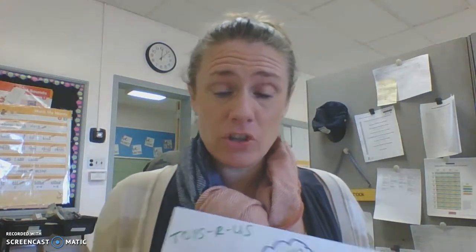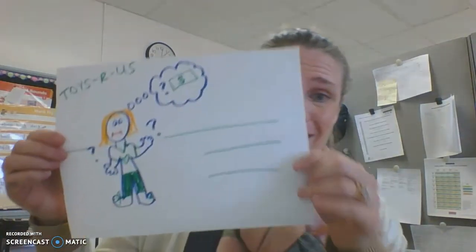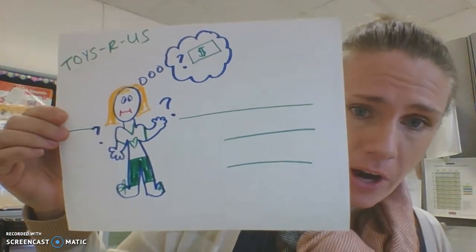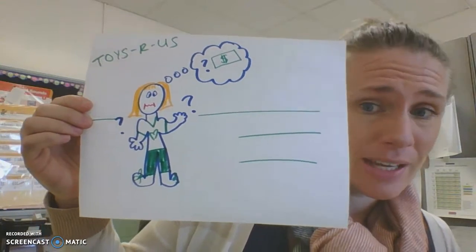Hi, today's assignment is to draw a picture of a time that you had a bad day. When I was about eight years old, I went to Toys R Us with a $20 bill and I lost it.